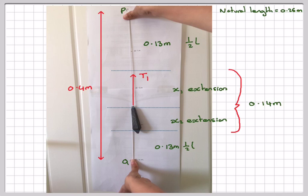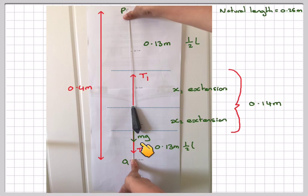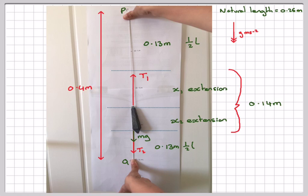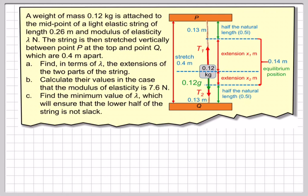We have a force acting downwards, which we call the tension T1 in the upper part. There is also a force acting downwards here — this is the tension T2 in the lower part of the string. And we also have the weight of the mass times g acting downwards, where g is in metres per second squared.